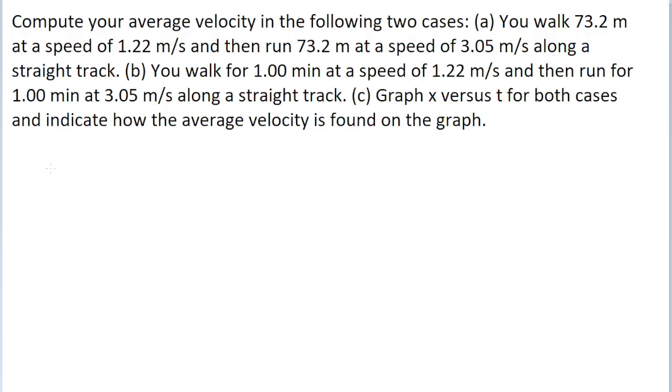The first part of this problem asks us to find the average velocity in a situation where you walk 73.2 meters at a speed of 1.22 meters per second, and then you start running 73.2 meters at a speed of 3.05 meters per second.